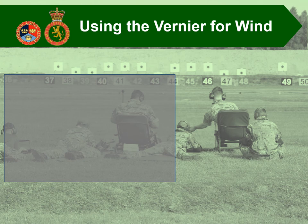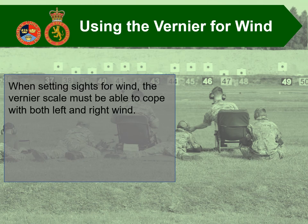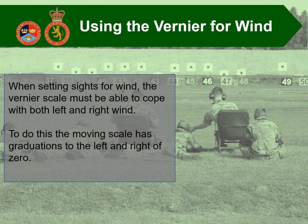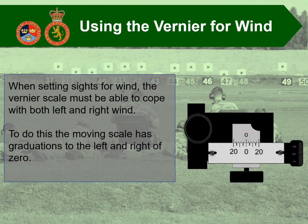Moving on to look at the wind verniers. When setting the sights for wind, the vernier must be able to cope with both left and right windage. To do this, the moving scale has graduations to the left and to the right of 0. It's important during the zeroing phase that when you have managed to get where you are hitting the centre of the target in zero wind conditions, that this vernier is slipped and adjusted so it reads 0. This is going to be one of the biggest aids with regards to your wind reading ability as you progress forward.